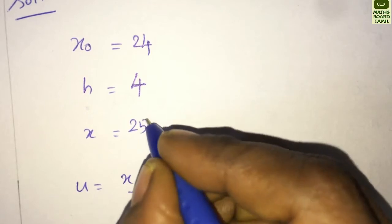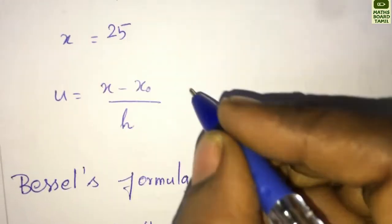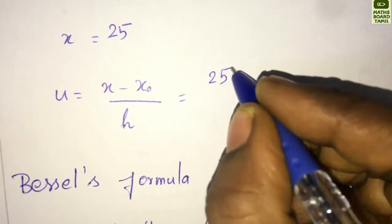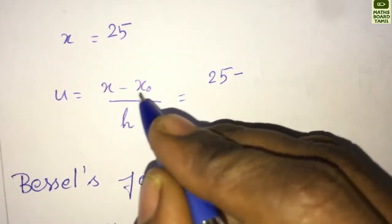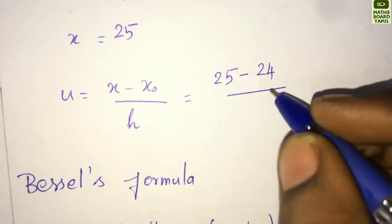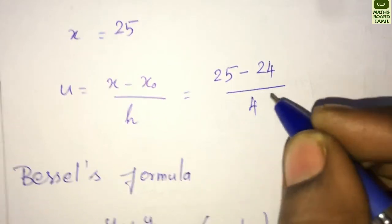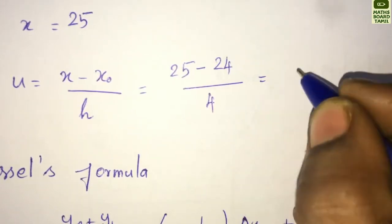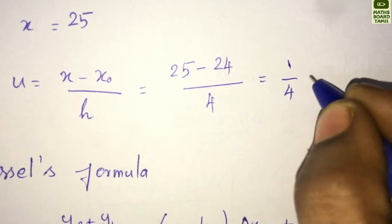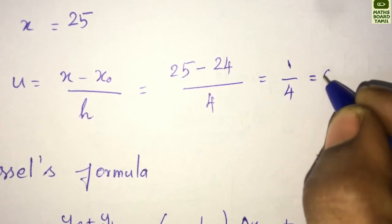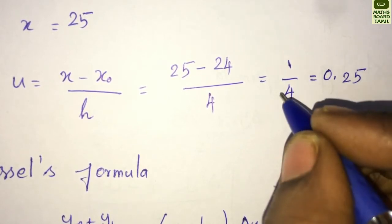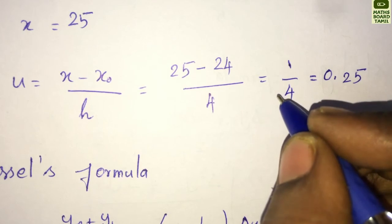We will find the value of U. So, U = (X - X0) / H = (25 - 24) / 4, which is equal to 1/4, that is 0.25.